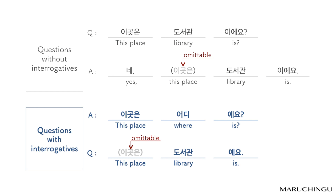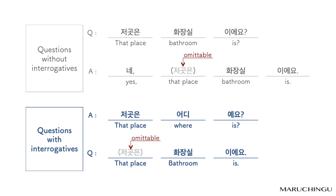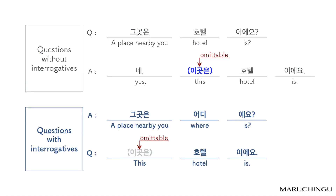Questions with interrogatives: 이곳은 어디예요? — 도서관이에요. 저곳은 화장실이에요? — 네, 화장실이에요. 저곳은 어디예요? — 화장실이에요. 그곳은 호텔이에요? — 네, 호텔이에요. 그곳은 어디예요? — 호텔이에요.